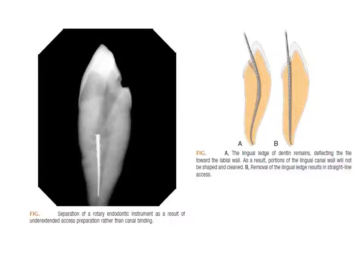Here again, this shows that removal of the shoulder can provide a straight line to the cavity. This x-ray is from a lower anterior tooth where a rotary endodontic instrument broke inside because the access cavity was not prepared adequately to provide a straight-line passage for the instruments.